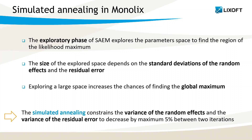To help escape the local maximum and successfully converge to the global maximum, the simulated annealing constrains the variance of the random effects and the variance of the residual error to decrease by 5% at maximum between two iterations.